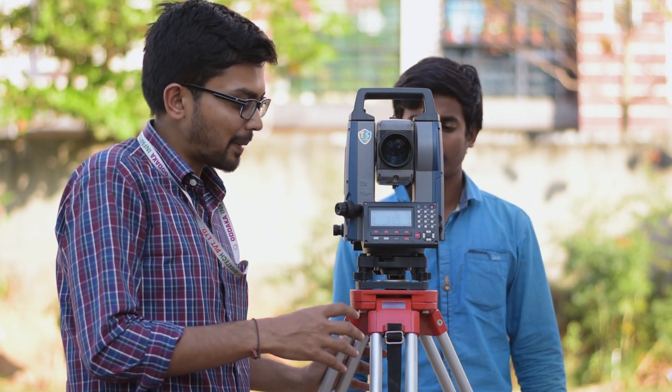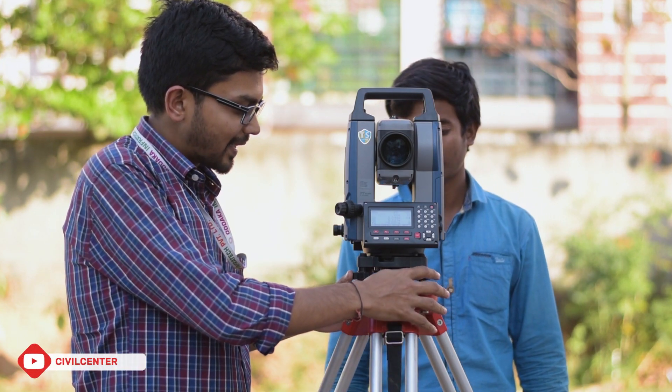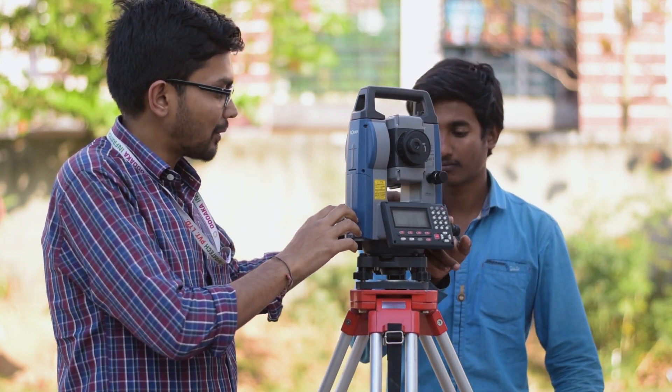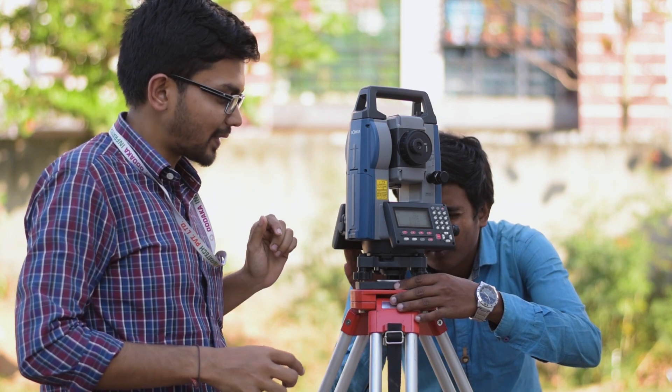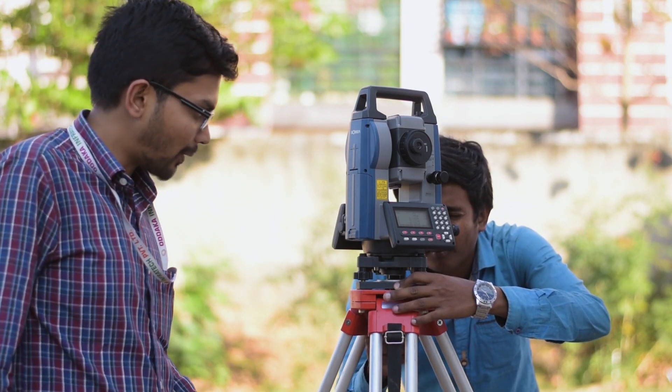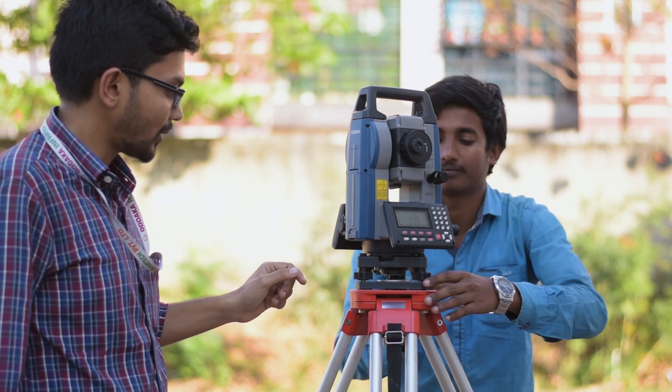The first step is centering the total station. For centering, we need to adjust our total station and view the mark with the help of this optical plummet. He is viewing this center mark with the optical plummet—it should come at the center so that the instrument is centered properly.